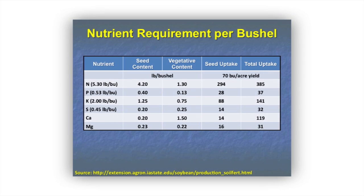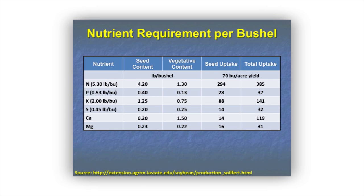This slide represents the nutrient requirement per bushel of soybean yield. Nitrogen is 5.3 pounds per bushel, but we get most of that through the atmosphere — if we had to pay for nitrogen for soybean production we would not be producing soybeans in the mid-south. Phosphorus is about half a pound per bushel. The key figure is potash at 2 pounds per bushel. On a 70-bushel average yield, we're removing a total of 141 pounds of potash per acre, with 88 pounds removed in the seed.